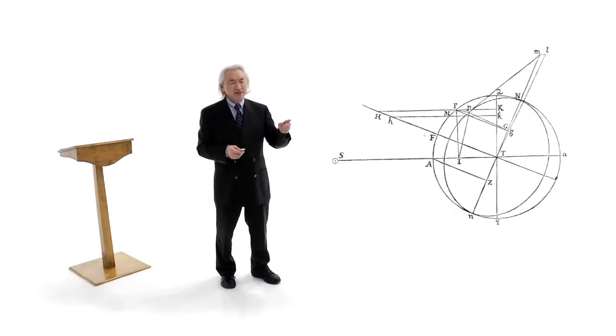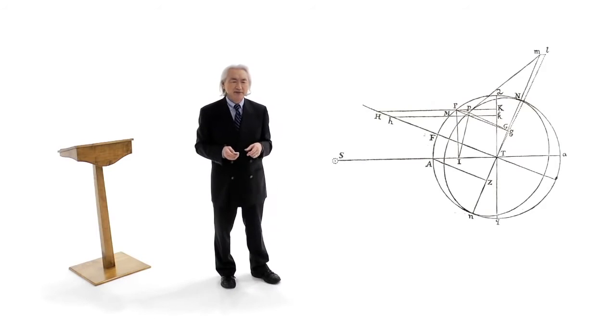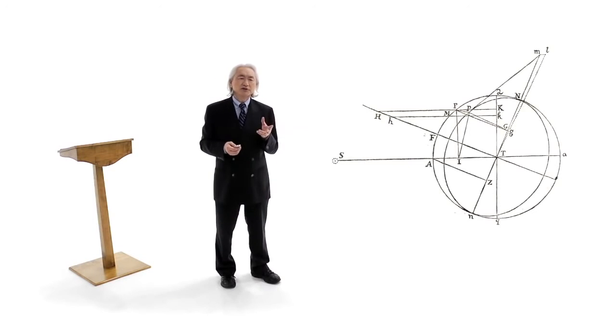The mathematics of his age was incapable of calculating the trajectories of objects moving under an inverse square force field. And that's what Isaac Newton did. He worked out the motion of the moon.